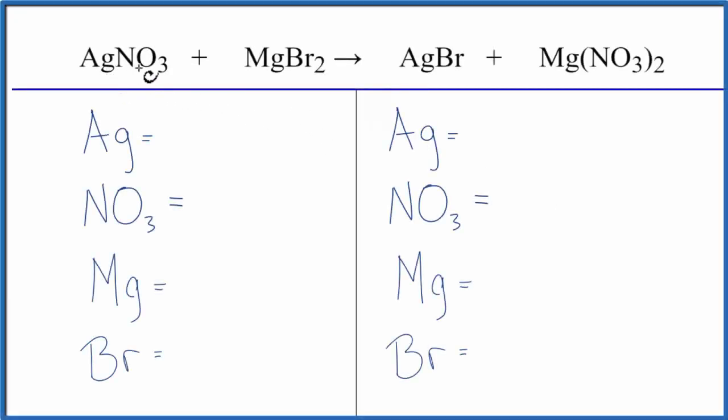In this video, we'll balance the equation AgNO3 plus MgBr2, that's silver nitrate plus magnesium bromide.